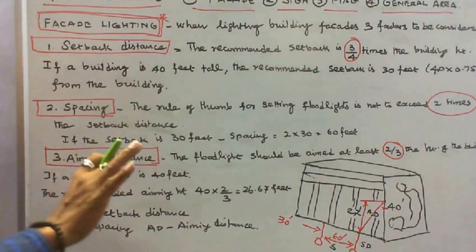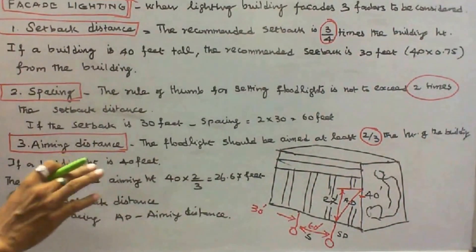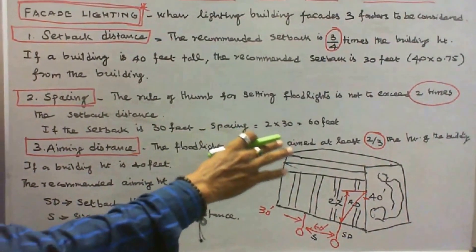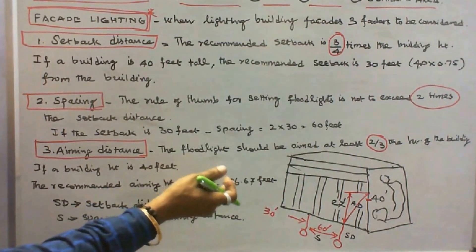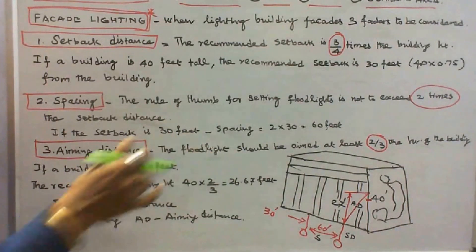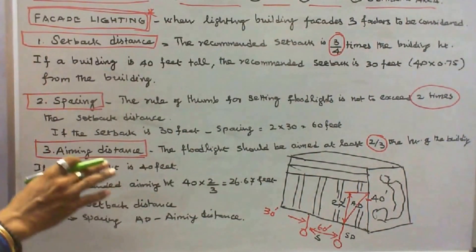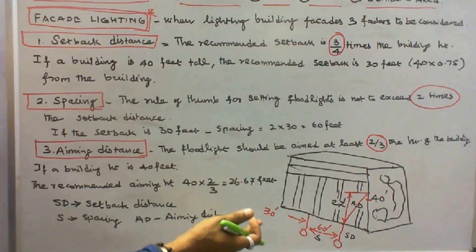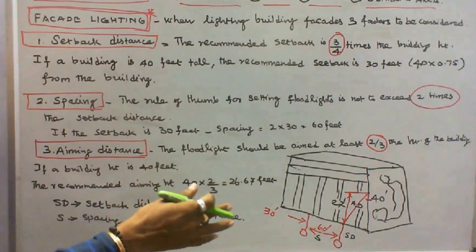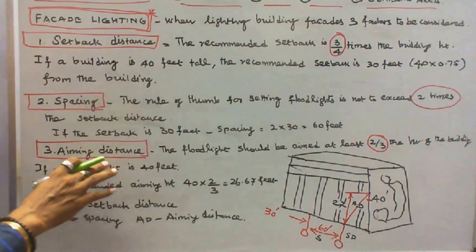The third is aiming distance. The total height is 40. The front light should be aimed at least two-thirds the height of the building. If the building height is 40, then 40 times 2/3 equals 26.67 feet, approximately 27 feet. To increase the aiming height, adjust the height of the projector from the ground level — by adjusting the projector height, you can vary the aiming distance.